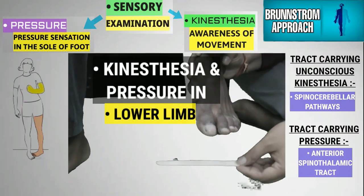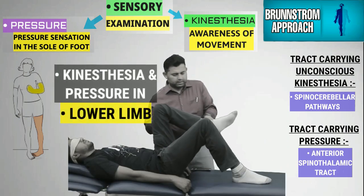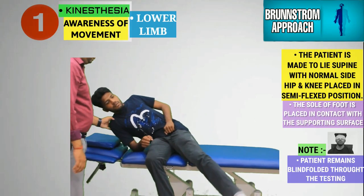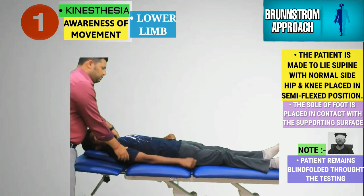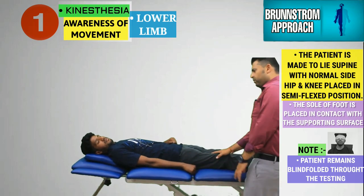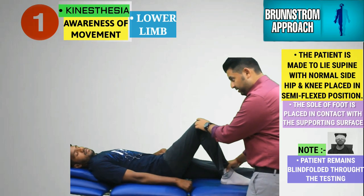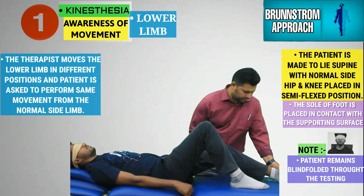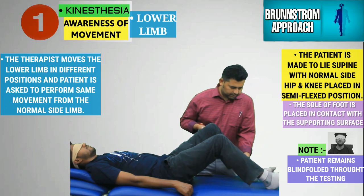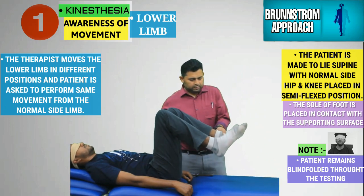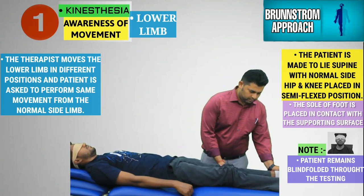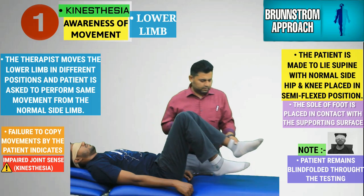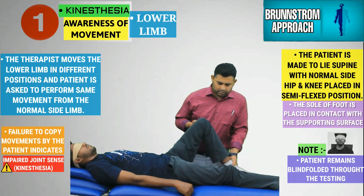The therapist next checks for kinesthesia sensations in the lower limb in a similar manner to that of the upper limb. The test is administered with the patient in the supine position and the unaffected lower limb placed so that the hip and knee are flexed and the sole of the foot is in contact with the supporting surface. The therapist passively moves the affected lower limb in different directions and the patient is asked to copy the movement with the unaffected side. Any marked difference in joint positioning between the two sides indicates impaired kinesthetic sensation in the lower limb.